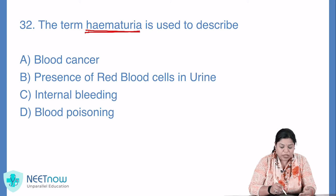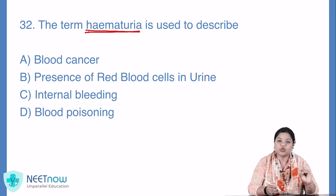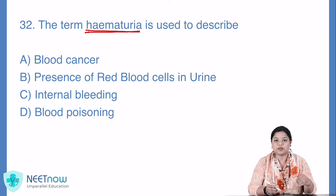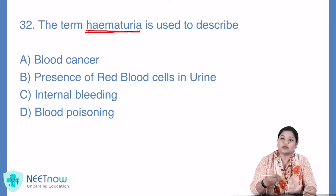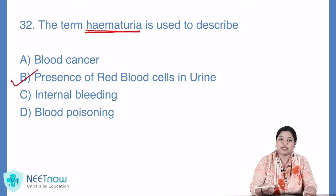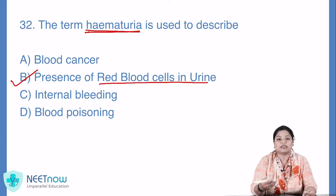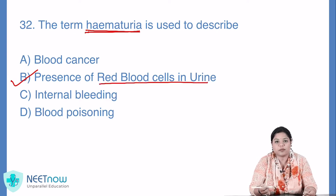Jaahan tak baat hematuria ki — hematuria mein aap ki jo urine hoti hai, usmein blood aane lagta hai. Toh RBCs ki presence hoti hai. Toh usko hum yeh kya kehte hain ki there is presence of RBCs, or red blood cells in urine. Option B aapka yahan sahi hai.